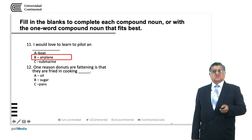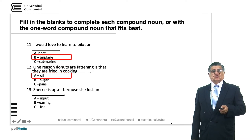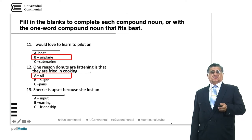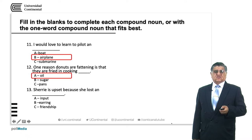Exercise: 'One reason donuts are fattening is that they are fried in cooking ___.' Options: oil, sugar, pans. The answer is cooking oil. Exercise: 'Sherry is upset because she lost an ___.' Options: input — doesn't make sense; earring — a piece of jewelry normally used in the ears; friendship. The answer is earring, and we also notice that 'an' doesn't go with friendship.